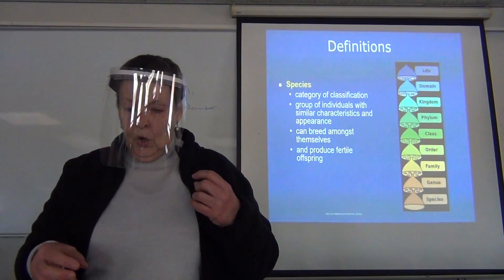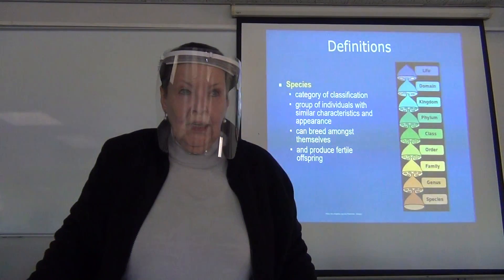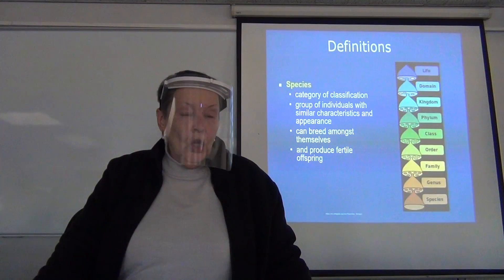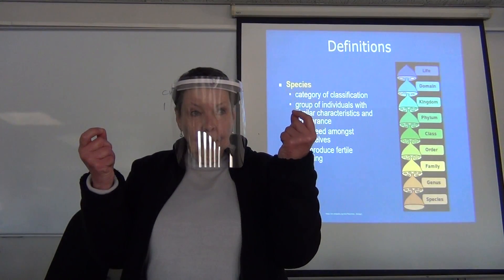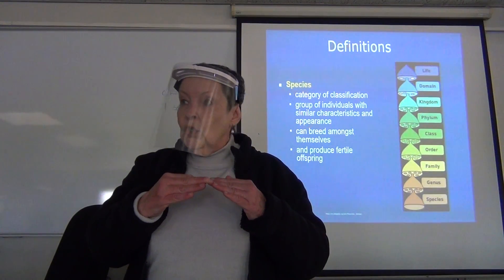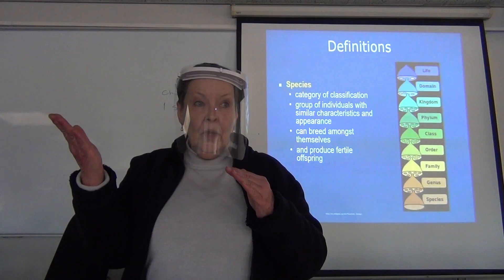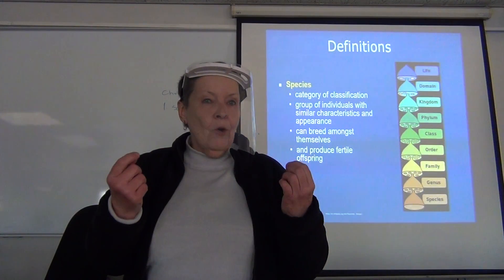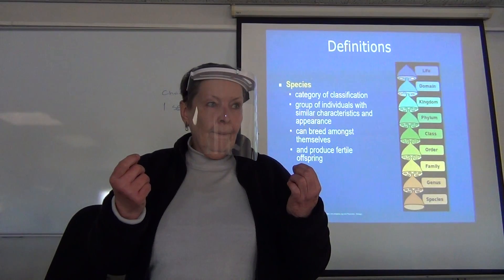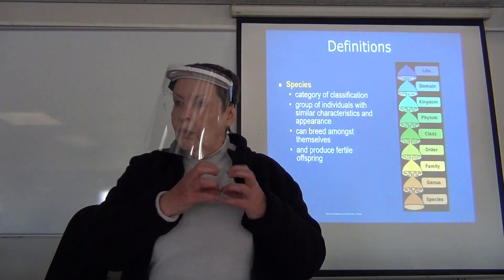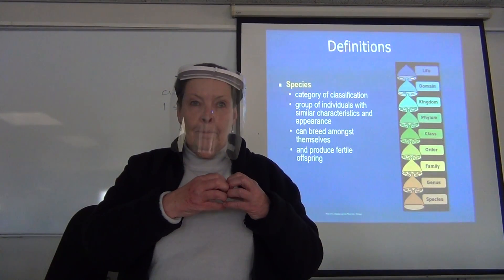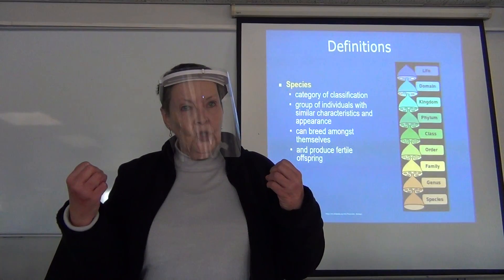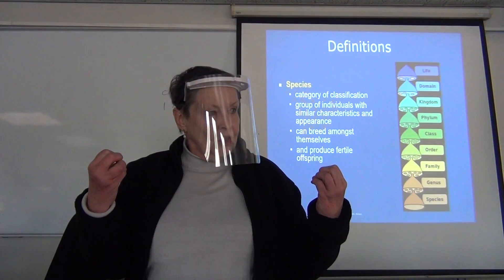Horses and donkeys are different species. A horse can breed with a donkey and produce offspring called mules. Mules cannot interbreed with each other — mules are sterile. For complicated reasons to do with chromosomes, they can't produce gametes. A male mule can't produce fertile sperm and a female mule can't produce fertile egg cells.